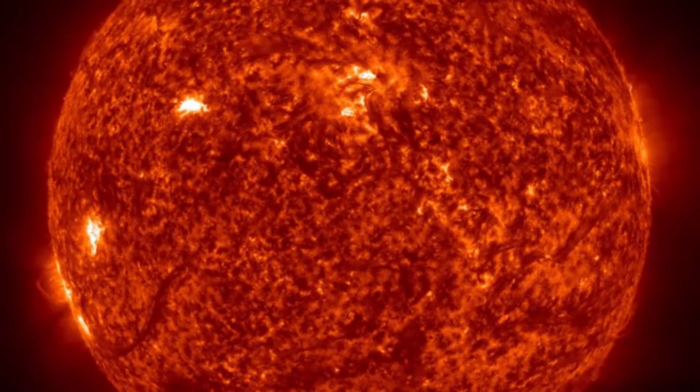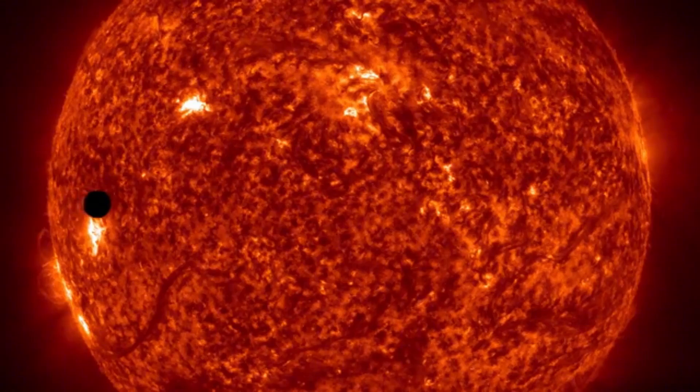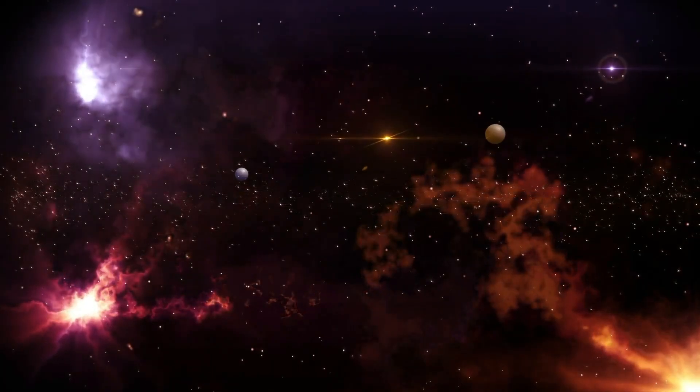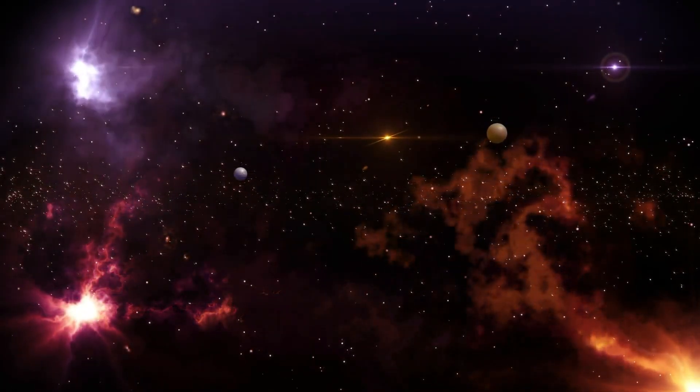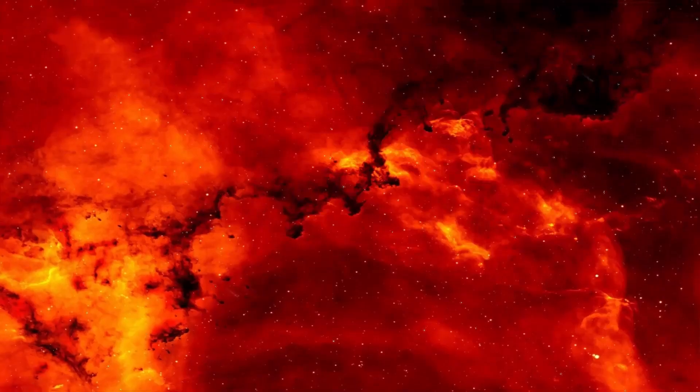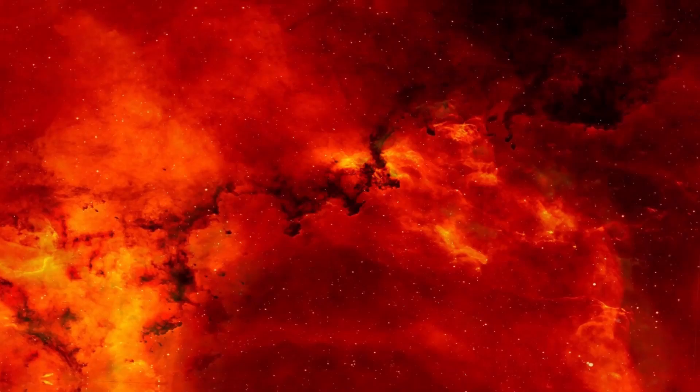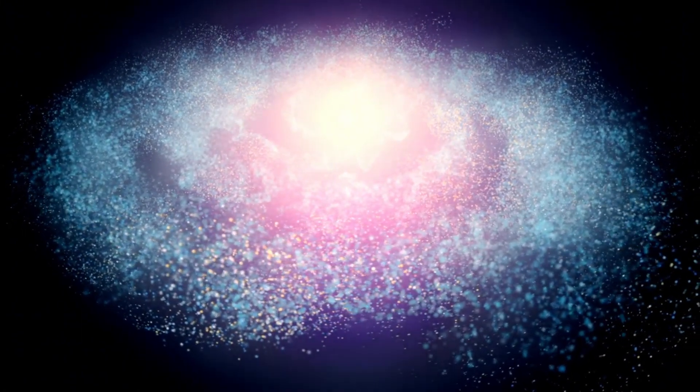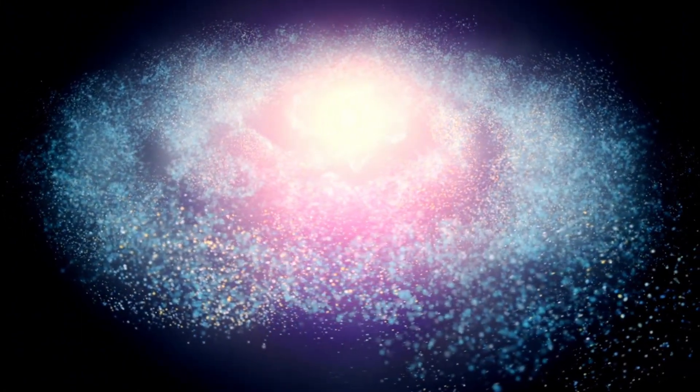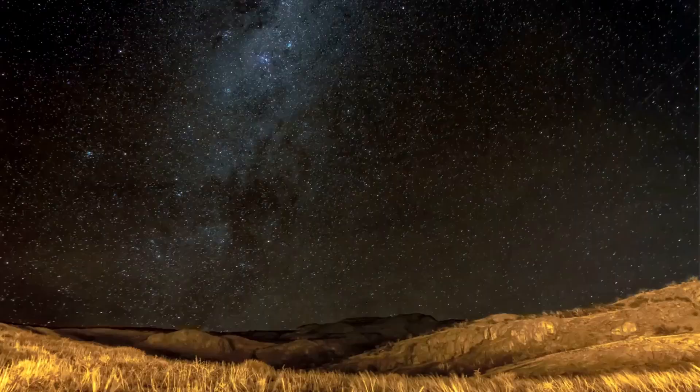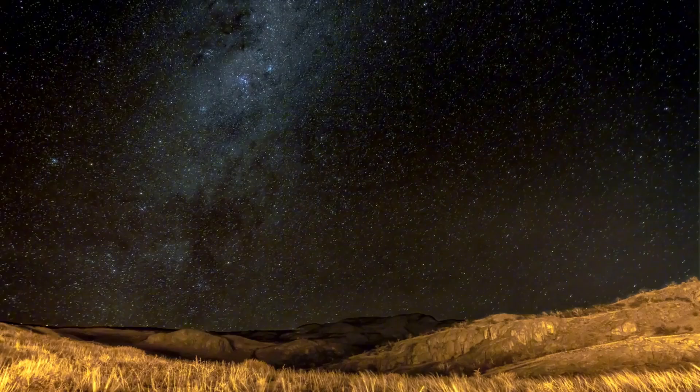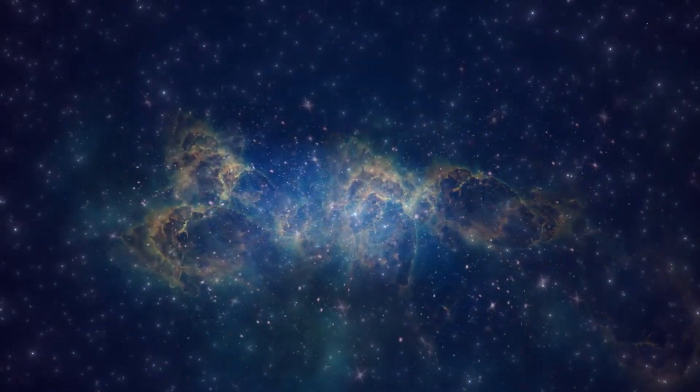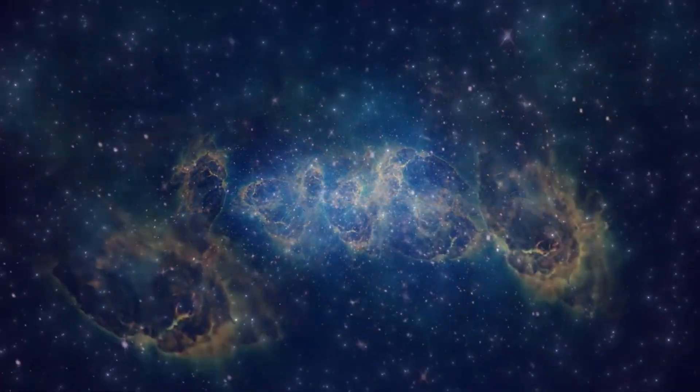While solar flares and CMEs are connected, they are not the same. A solar flare can happen freely, but at times, an especially strong solar flare can be joined by a CME, although a solar flare doesn't necessarily cause a CME. They can be connected in terms of risk. Solar flares can disturb radio interchanges, navigation signals, and represent a huge gamble to space travelers in space due to the extraordinary radiation. Anyway, CMEs can have a more extensive effect. CMEs can cause geomagnetic storms that disturb power networks, satellite activities, and navigation frameworks. They can likewise enhance auroras but present serious dangers to Earth's innovation and foundation.